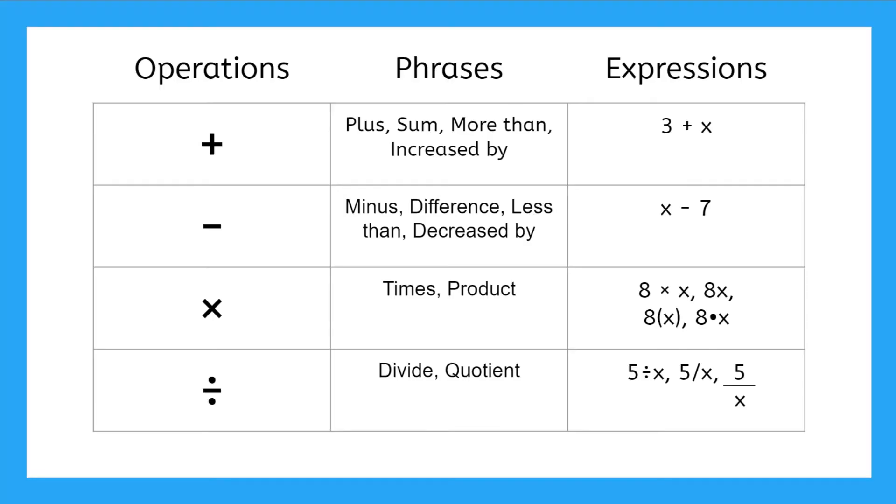So, let's take a look at what this table means. If we look here, operators or the operation are plus, minus, multiplication, and division signs. And the phrases that represent each of these can be found in the column right next door.